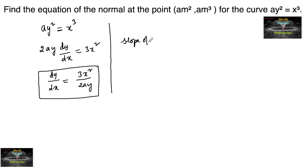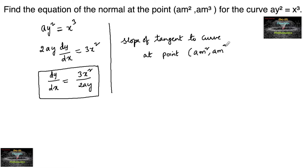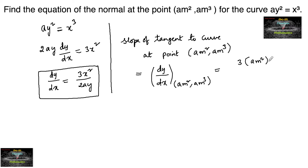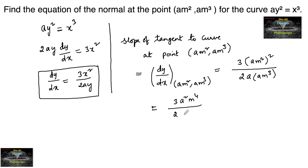Now, the slope of the tangent to the curve at the point (am², am³) is given by dy/dx. Substituting x = am² and y = am³, we get 3(am²)² / (2 · a · am³) = 3a²m⁴ / (2a²m³), and cancelling terms we get 3m/2.